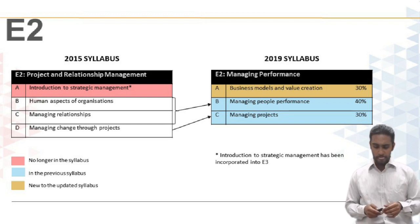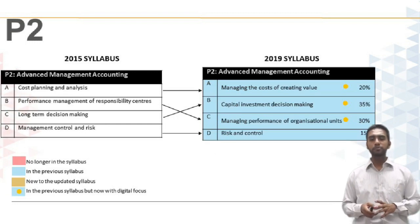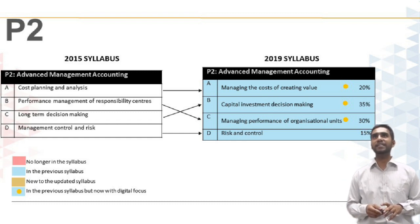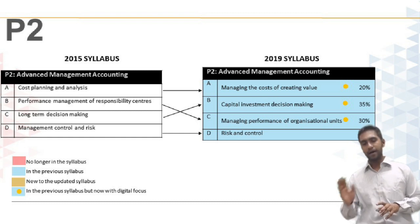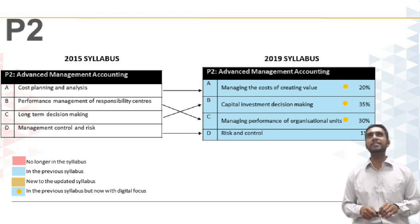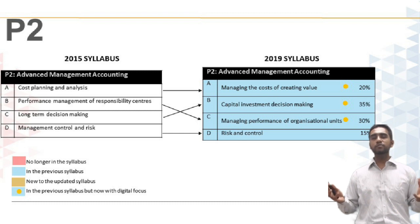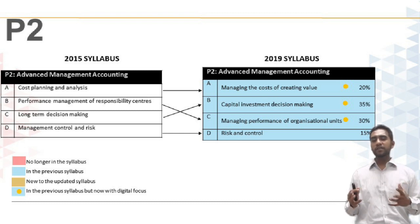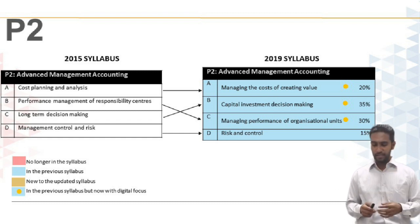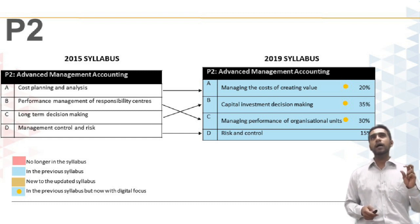Moving on to the second subject at the management level: P2. All of the topics that were there in the 2015 syllabus remain in the 2019 syllabus — every single one of those topics A to D remain. The only thing to note is that there is a digital spin to topics A, B, and C, covering how technology is having an impact on creating value, costing, and investment decision making. The overall topics still continue, but you will need to look at a few areas which will be taught slightly differently.